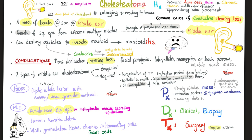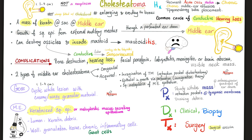On physical exam, cholesteatoma appears as a pearly white mass behind the tympanic membrane, usually at the anterior superior quadrant of the eardrum. We also see retraction pockets in the eardrum — hence the term retraction pocket cholesteatoma — along with some discharge. Diagnosis is made clinically; the most accurate test is biopsy, which is usually not performed before surgery. Management is surgical — the mass needs to be removed.